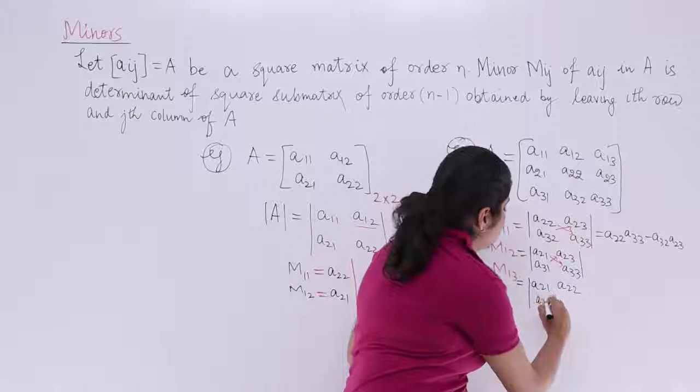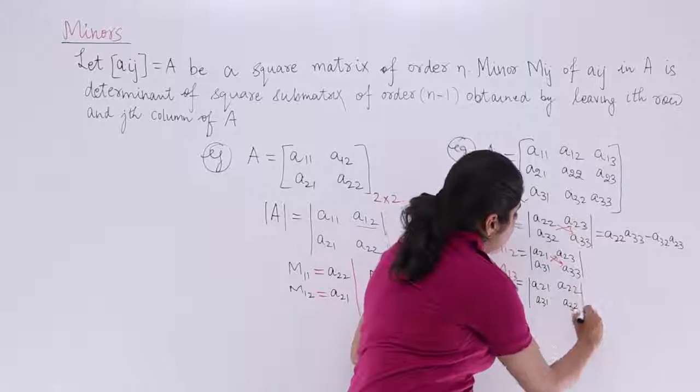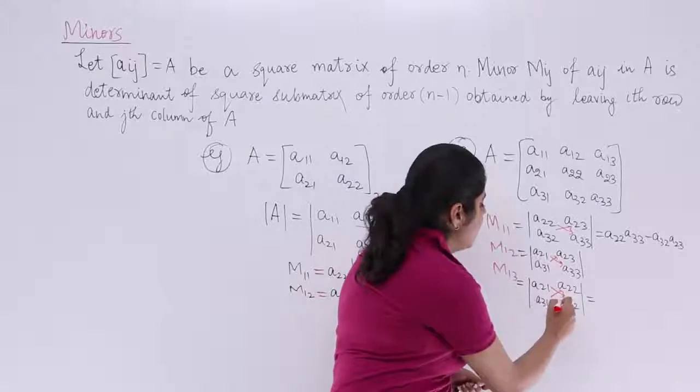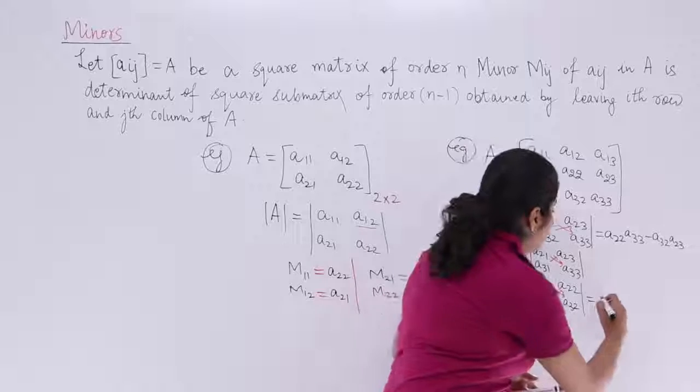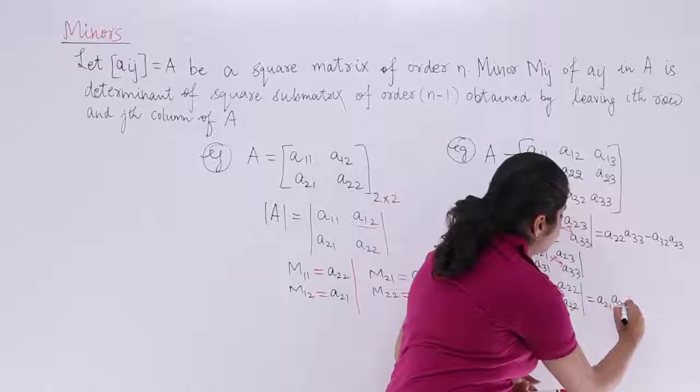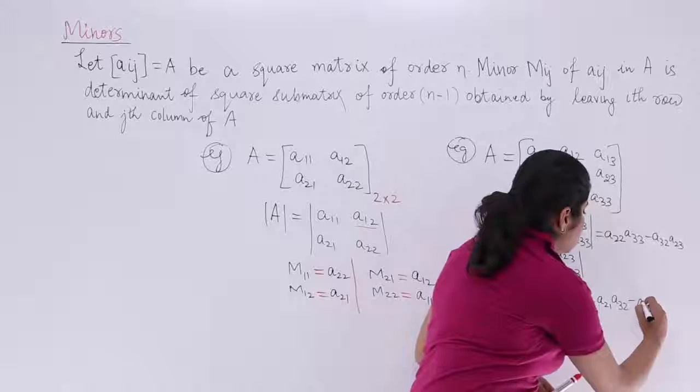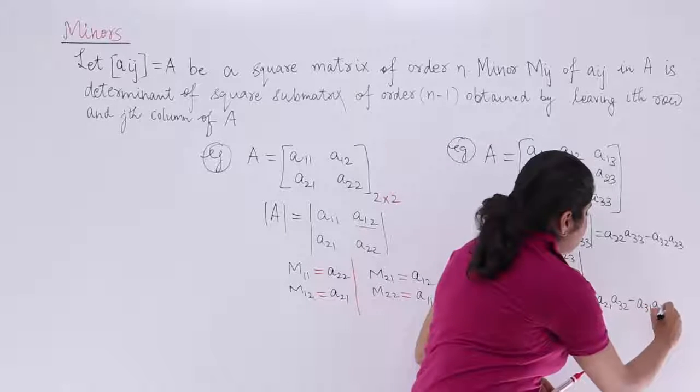A31, A32. I solve this one for you at least. Cross-multiply, it is A21, A32 minus A31, A22. So it is A31, A22.